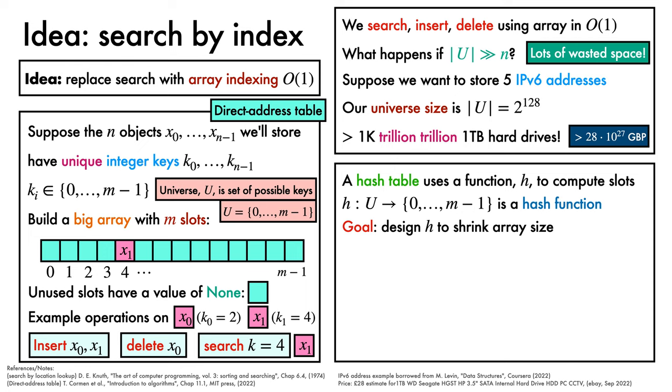In fact, we're going to aim for an array with a number of slots m that goes linearly with the number of objects n, rather than with the size of the universe of possible keys.